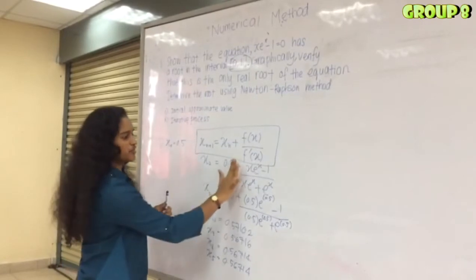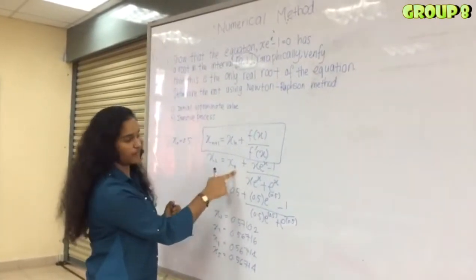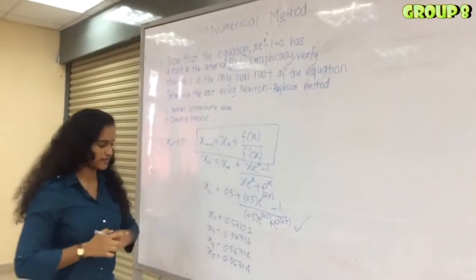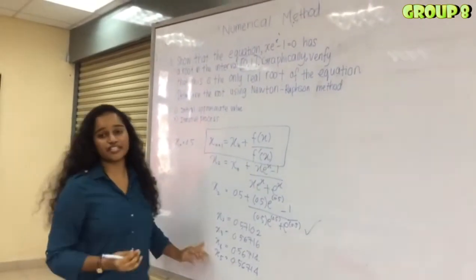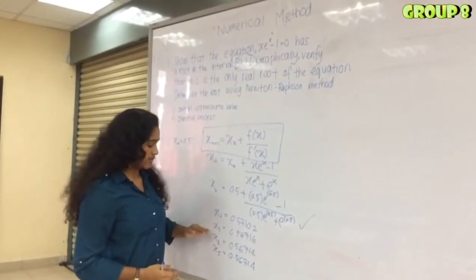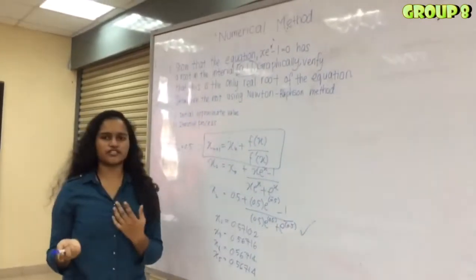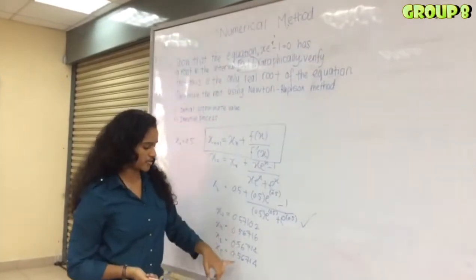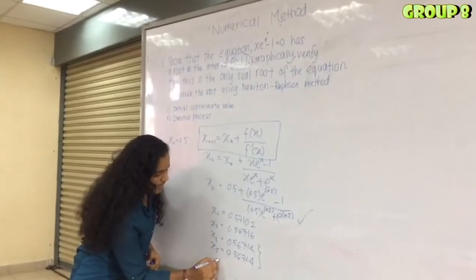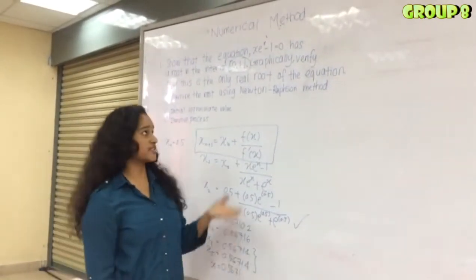Applying Newton-Raphson, it is better to show the full substitution for x₁ (initial value 0.5) and display all substituted answers. It is good practice to manually show at least x₂ and x₃, then use the calculator for further iterations. Since the question did not specify decimal places, giving 3 to 4 decimal places is best. Since x₄ and x₅ are closely equal, we conclude the root is x = 0.5671 (to 4 decimal places).